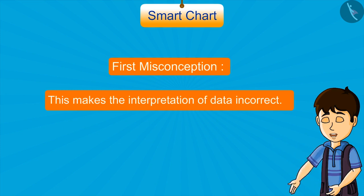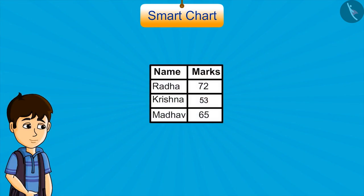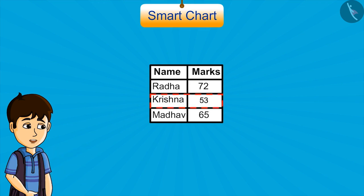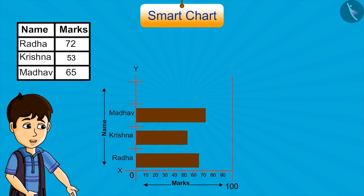For example, look at this data. Here are the marks scored by three students in maths: Radha got 72, Krishna got 53, and Madhav got 65. Let's represent this data in strips.